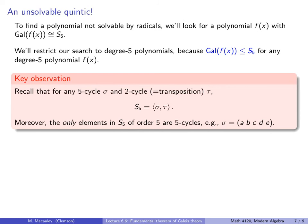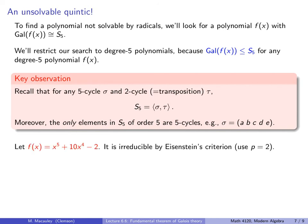Another key observation: the only elements in S5 of order five are 5-cycles. That's not true for general n — in S6 you could have a product of a 2-cycle and a 3-cycle with order 6 that is not a 6-cycle — but in S5, because five is prime, the only elements of order five are 5-cycles. Here is my polynomial which I claim will do the trick: x⁵ + 10x⁴ - 2.